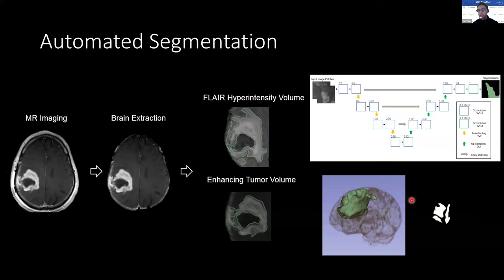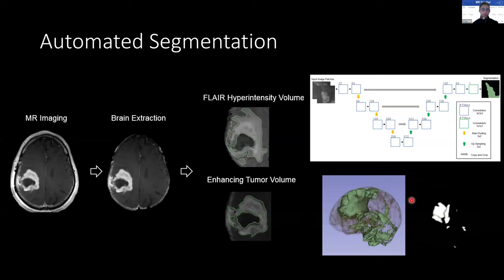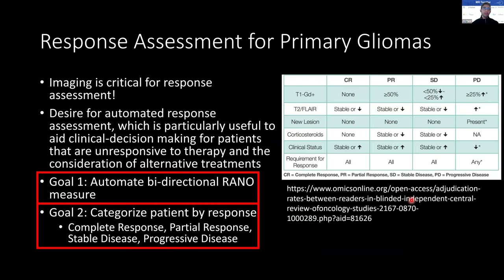It's just an interesting look at how a neural network trains and gets better over time. Once we have a way of estimating volumetric tumor burden, the logical next step is to use this for response assessment. Here, we'd like to assess if the patient has experienced complete response, partial response, stable disease, or progression based on what's known as the Response Assessment in Neuro-Oncology criteria, or RANO.